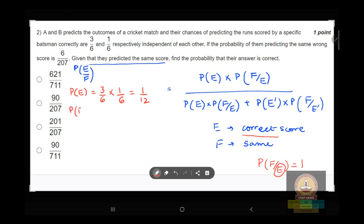So P(F|E) is 1. Now we have to find the P(E complement). It would be 1 minus 1/12. No sorry, it would be 3/6 times 5/6.